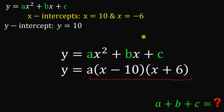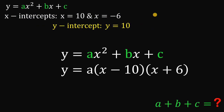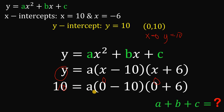Another given is the y-intercept, which corresponds to the point (0, 10) on the Cartesian plane. This tells us that when x equals 0, y must equal 10. So replacing all x with 0, y must equal 10. Doing that, we get: 10 equals a multiplied by 0 minus 10, multiplied by 0 plus 6.